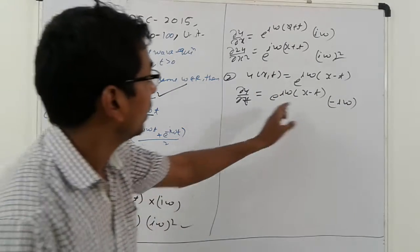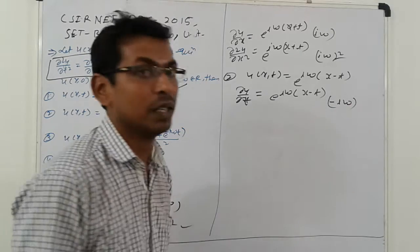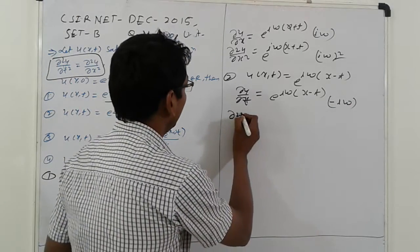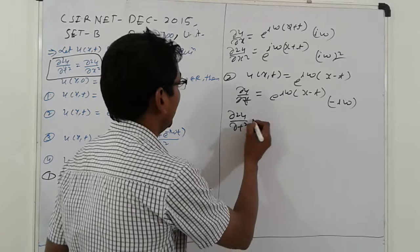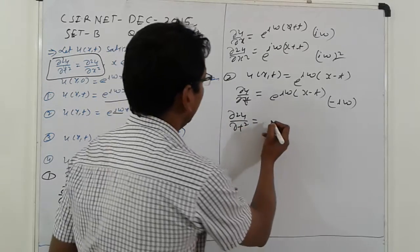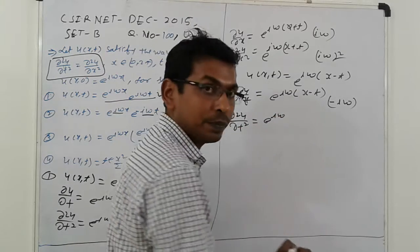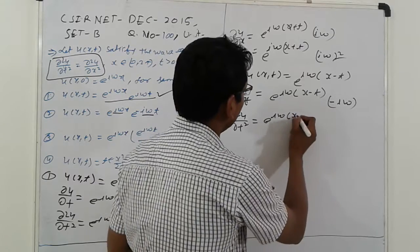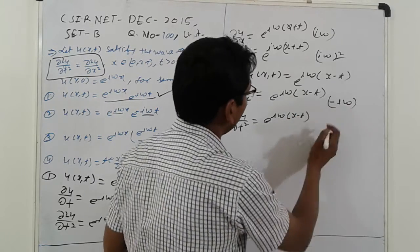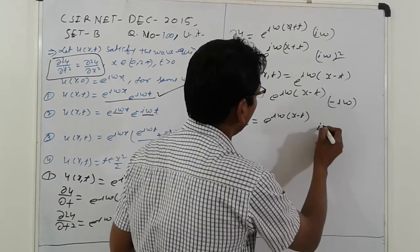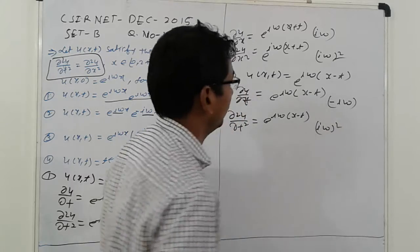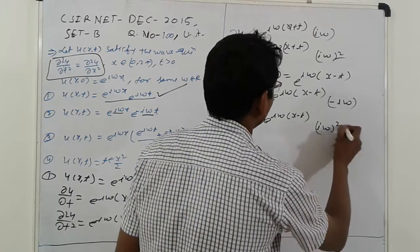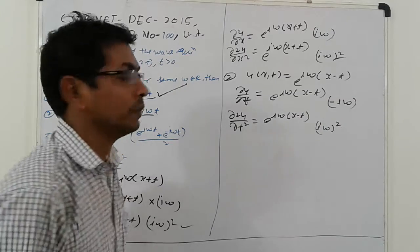Since the derivative of t is minus 1, we get minus iω. Next, ∂²u/∂t² equals e raised to iω(x−t) into (iω)², because minus times minus gives plus, so we get (iω)².